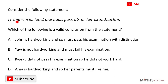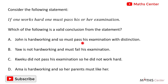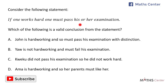Consider the following statement: if one works hard, one must pass his or her examination. Which of the following is a valid conclusion from the statement? The first option is John is hard working and so must pass his examination with distinction. The second is Yao is not hard working and must fail. The third is Kweku did not pass his examination so he did not work hard. The fourth is Amma is hard working and so her parents must like her. When we consider the statement carefully, we can see that there are two groups of people: those who work hard and those who pass their examination.